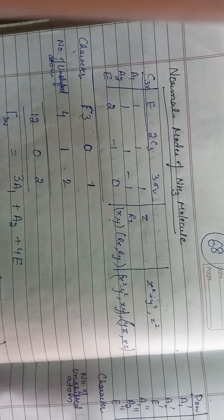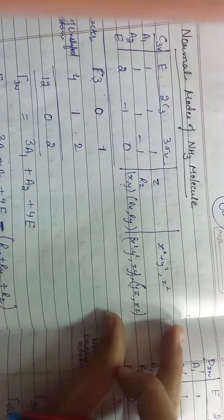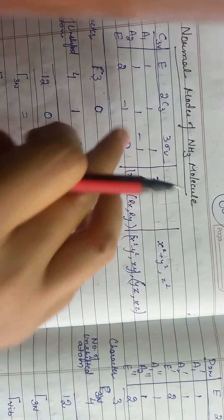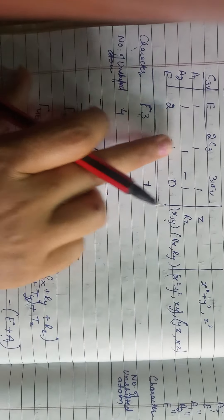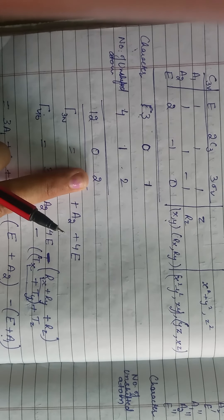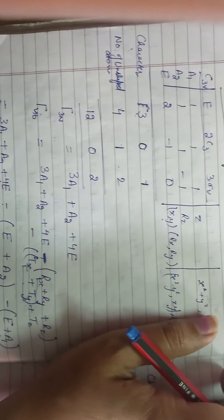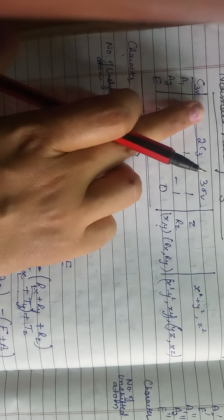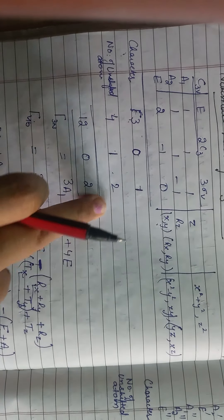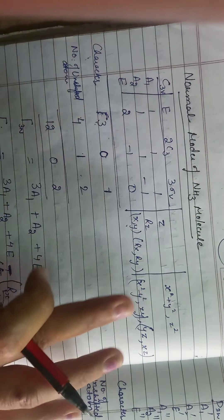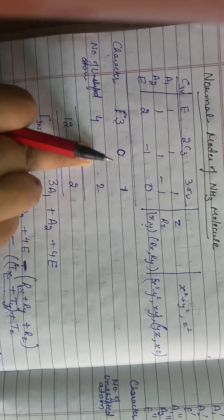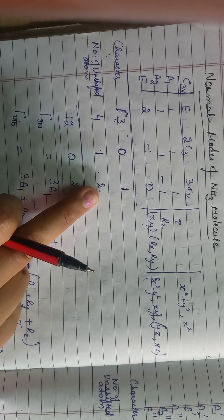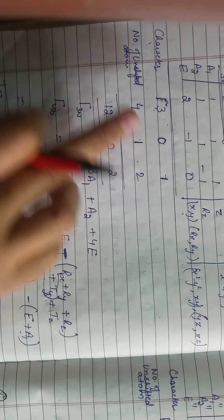Hum yahan note kar lete hain: rz hamaara A2 ke corresponding hai. Z translational ko represent karta hai, to tz ka symbol kya hai: A1. Uske baad tx ka symbol aur ry ka symbol: B1. Aur rx ka: B2, aur translational y ka symbol bhi B2 hai. Clear. Ab yeh wale symbols ki value yahan substitute ki hai: rx ke liye B2, ry ke liye B1, rz ke liye A2 — yeh minus ho jayenge kyunki humnne vibrational chahiye. Translational ke liye: x ke liye B1, y ke liye B2, z ke liye A1 — yeh symbols put kiye aur vibrational modes hamare paas aa gayi.